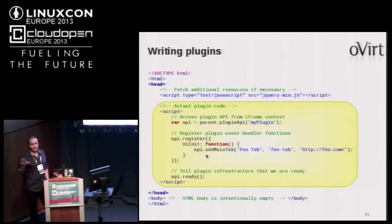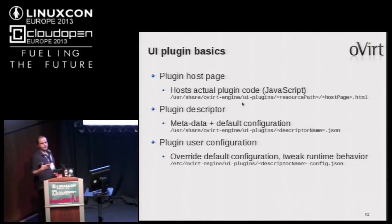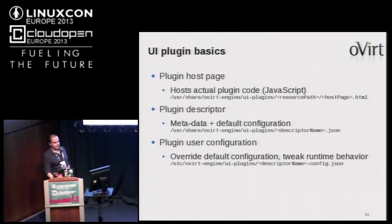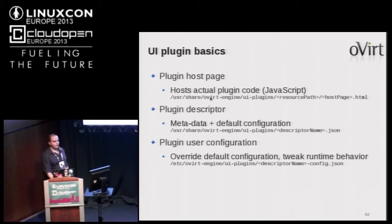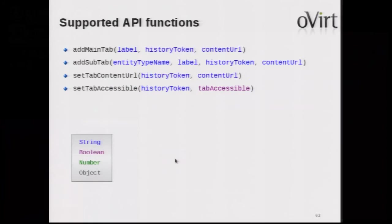The basics of a UI plugin: it contains an HTML file (the plugin itself) and a plugin descriptor — a JSON file containing different configuration items. If you install the plugin with a specific configuration and want to override it, you can create a new override file. Plugin files are located at /usr/share/ovirt-engine/ui-plugins, the configuration file is there as a JSON file, and overrides go in /etc/ovirt-engine.